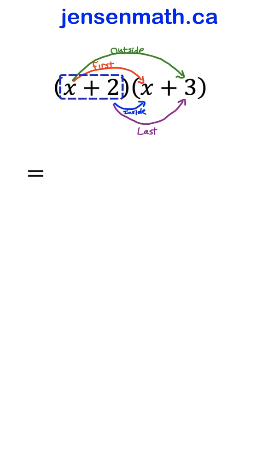Each term in the first binomial, so the x and the 2, have to get multiplied by each term in the second binomial, x and 3.